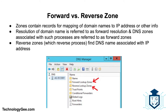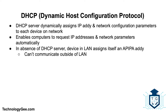DNS zones contain records for the mapping of domain names to IP addresses or other information. The resolution of a domain name to its assigned information is called forward resolution, and the DNS zones associated with this are called forward zones. Reverse zones are used for the reverse process — finding the DNS name associated with an IP address.